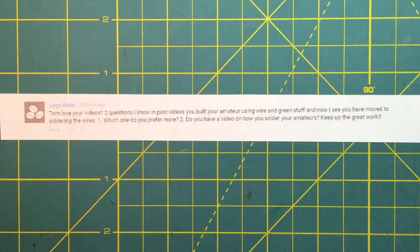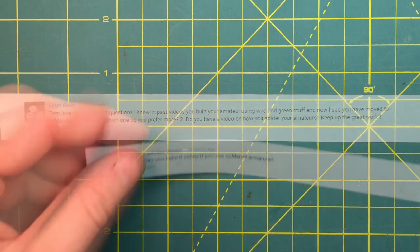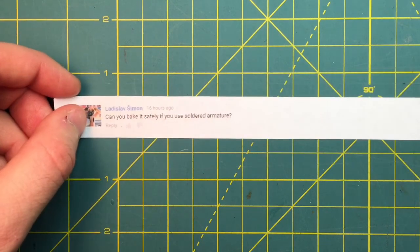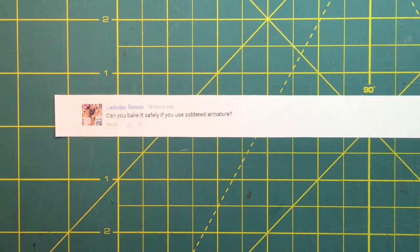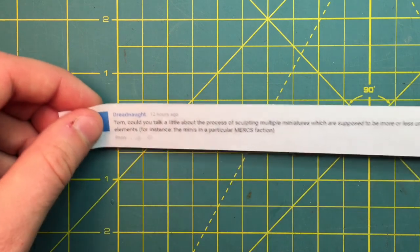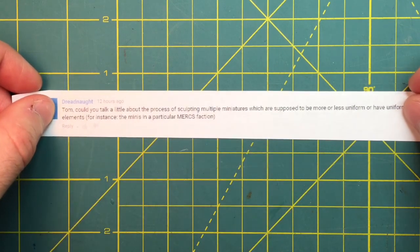Here's another name - Ladislav Simon: Can you bake it safely if you use soldered armature? Yes, you can bake it safely. The solder melts at a much higher temperature than it takes to bake your miniature if you're using Fimo, or even to vulcanize. You're totally fine, totally safe, don't worry about it.